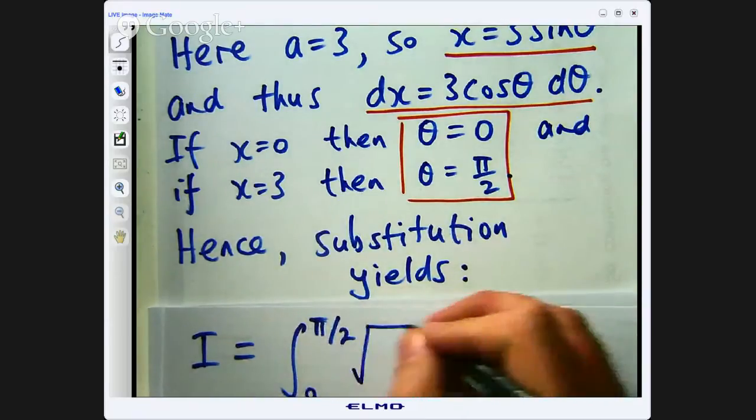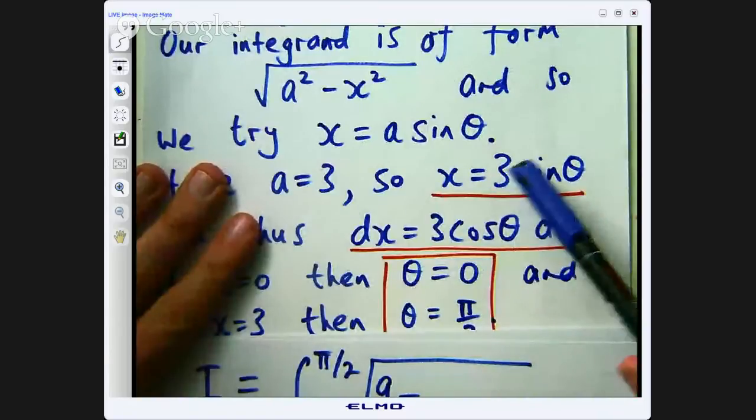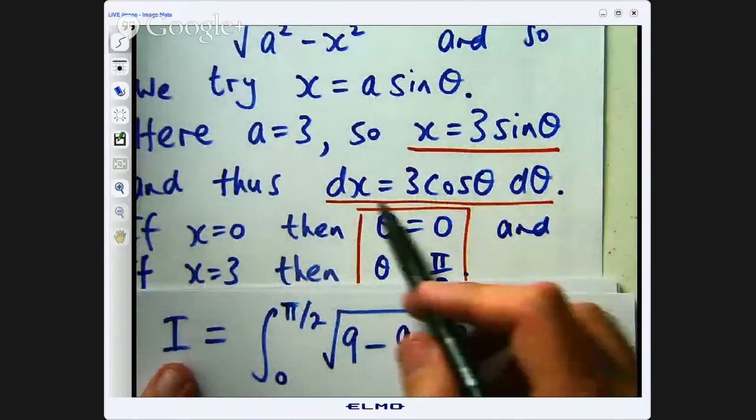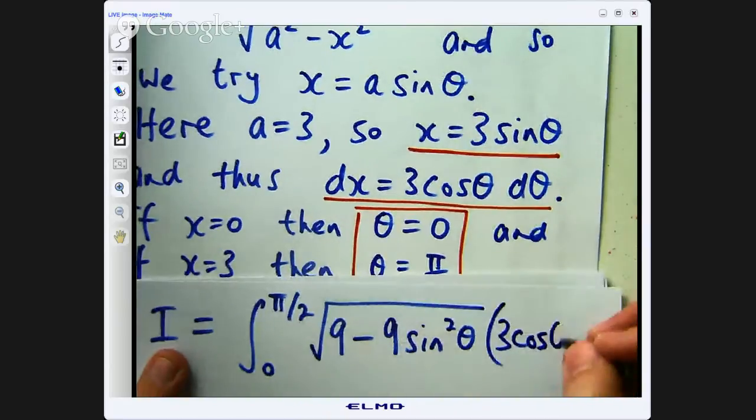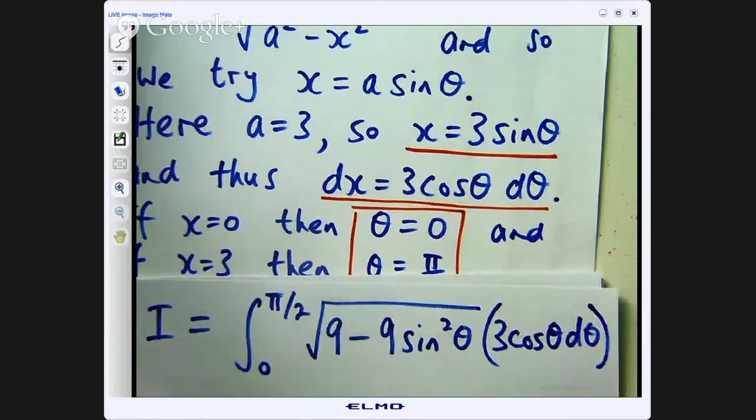So we have got this big so when we plug this in we are going to square this out so it is going to be 9 sine squared theta times with dx so dx is 3 cosine theta d theta.